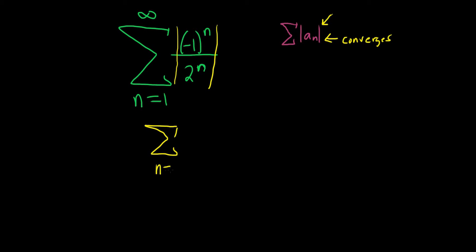When we do that, the (-1)^n will go away. Because if you take the absolute value of (-1)^n, no matter what, this is going to be one or negative one. And in any case, the absolute value of that is one. So we just get 1/2^n.